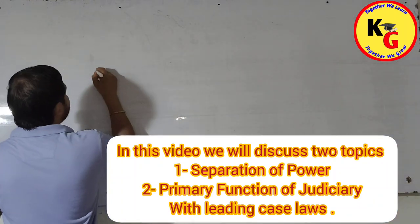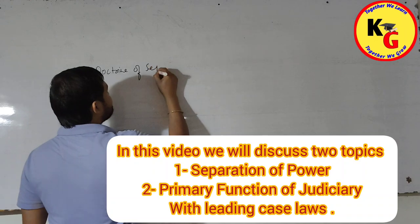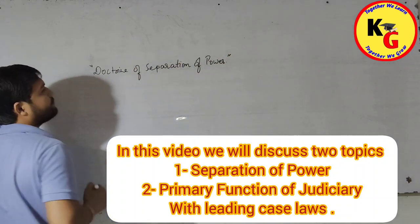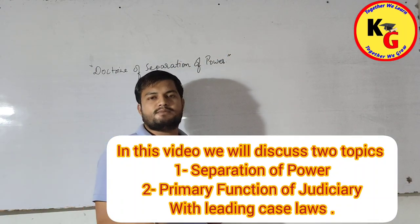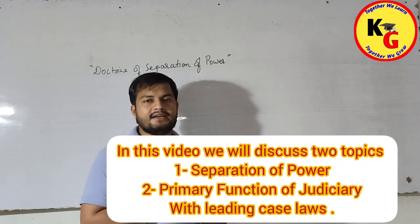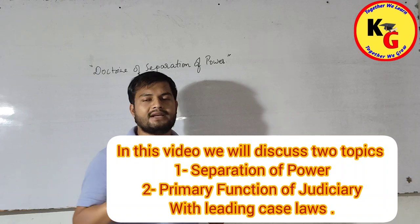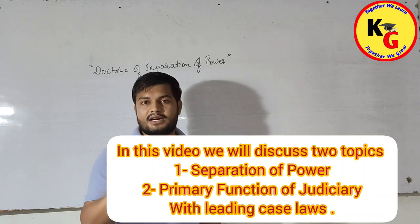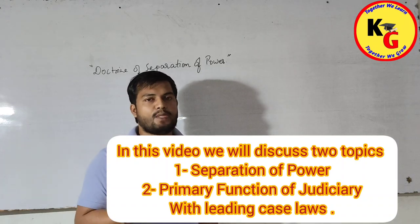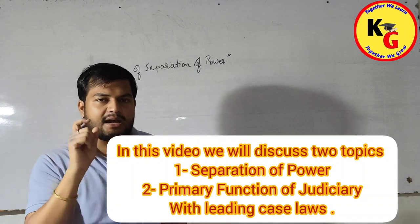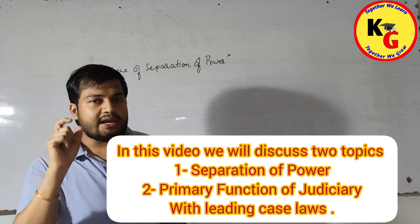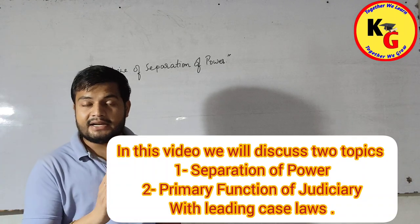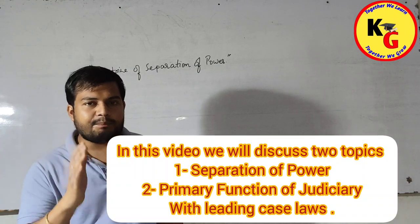Doctrine of separation of power. When we talk about the organs of democracy, toh basically democracy ke 4 pillars hai, 4 organs hai. The very first one is legislature, second is executive, third is judiciary and last one is press or media. In 4 organs ka apna importance hai aur apna areas of work hai. These are independent bodies - in 4 organs ka apna functions hai.